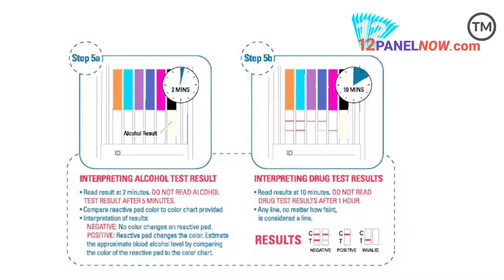The interpretation of the alcohol results: a negative result shows no color change on the reactive pad. For a positive result, the reactive pad changes color. Estimate the approximate blood alcohol level by comparing the color of the reactive pad to the color chart.